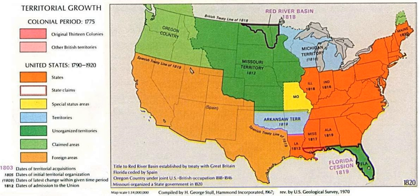The Missouri Compromise was the legislation that provided for the admission to the United States of Maine as a free state along with Missouri as a slave state, thus maintaining the balance of power between North and South in the United States Senate. As part of the Compromise, slavery was prohibited north of 36 degrees 30 minutes, excluding Missouri.